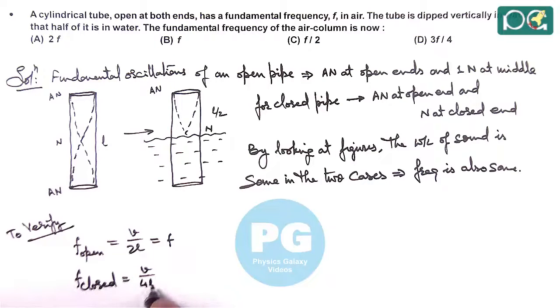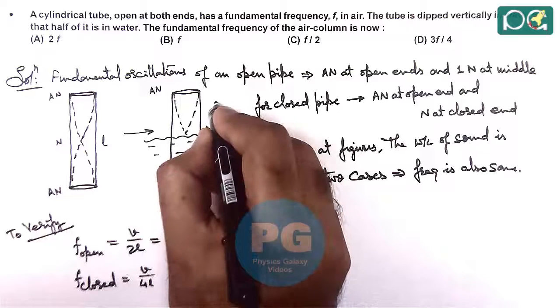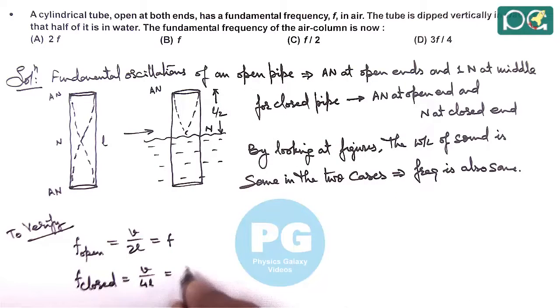And here, length is reduced to L by 2. So here, we can write it, V upon 4 times, this is L dash, or it is 4 times L by 2. This comes out to be V by 2L only, so the same frequency is there.